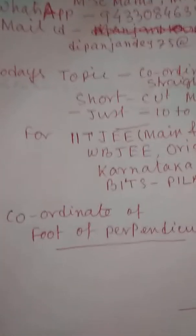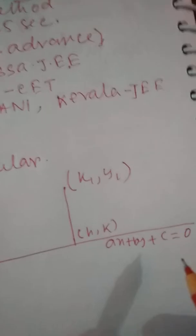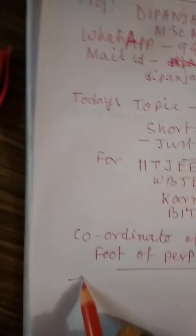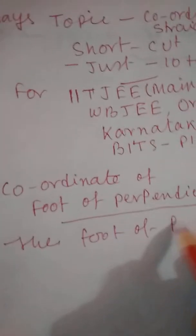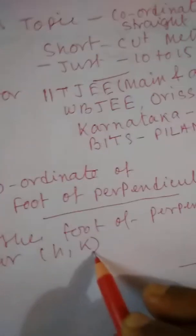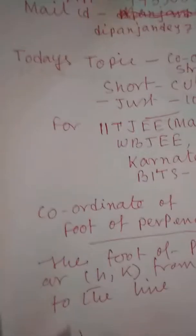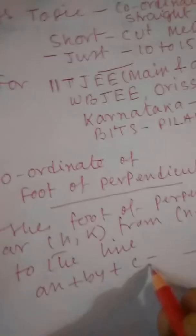So, how to find the foot of perpendicular? I have taken a point (X₁, Y₁) which is outside the line. And (H, K) is the foot of the perpendicular. The line is AX + BY + C = 0. The foot of perpendicular is (H, K) from the point (X₁, Y₁) to the line AX + BY + C = 0.